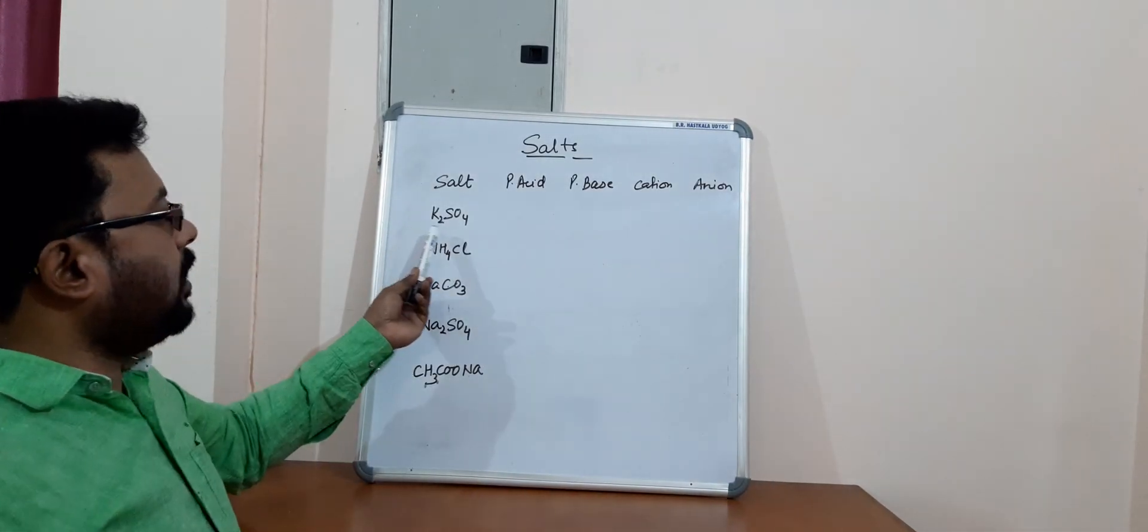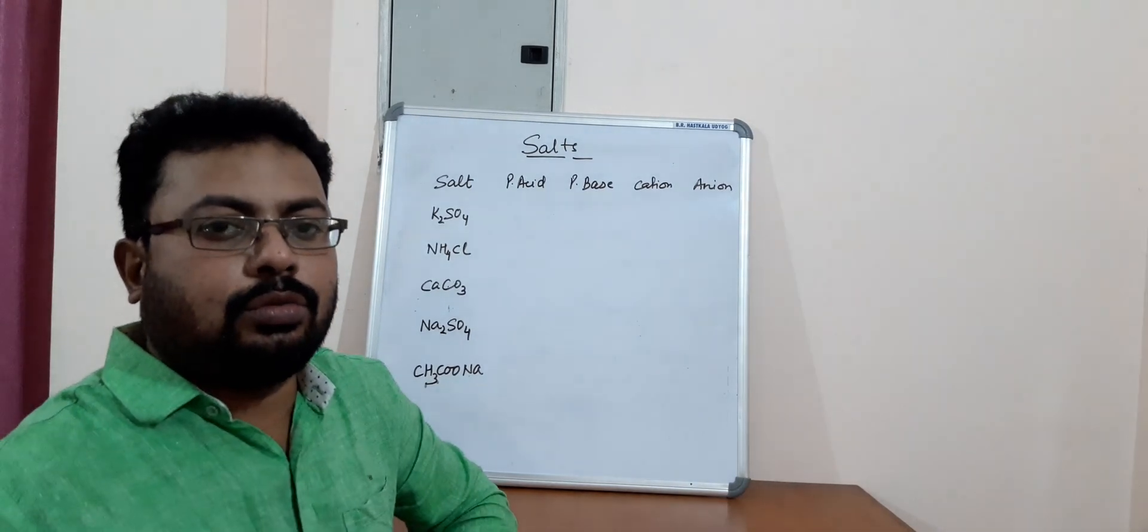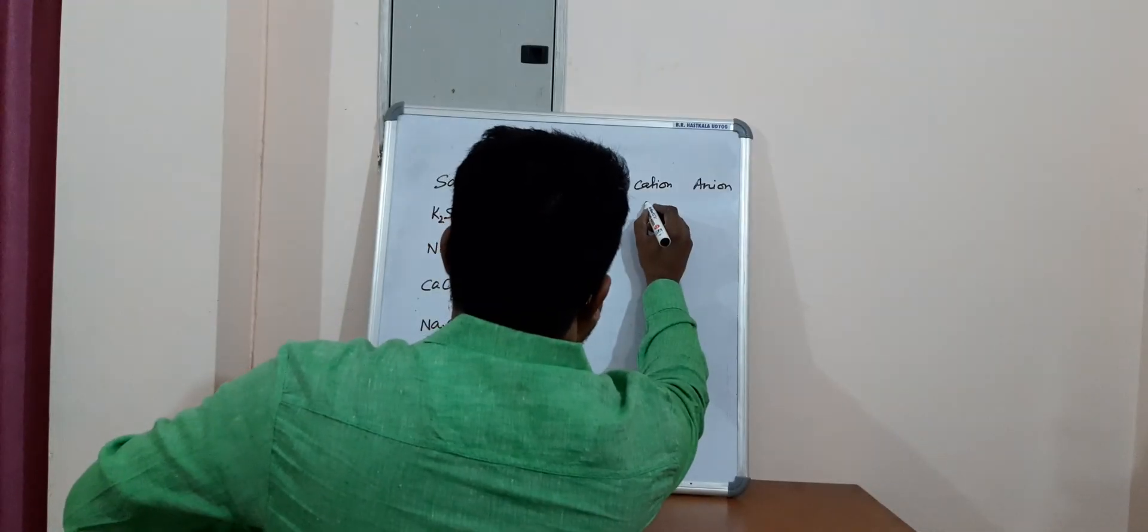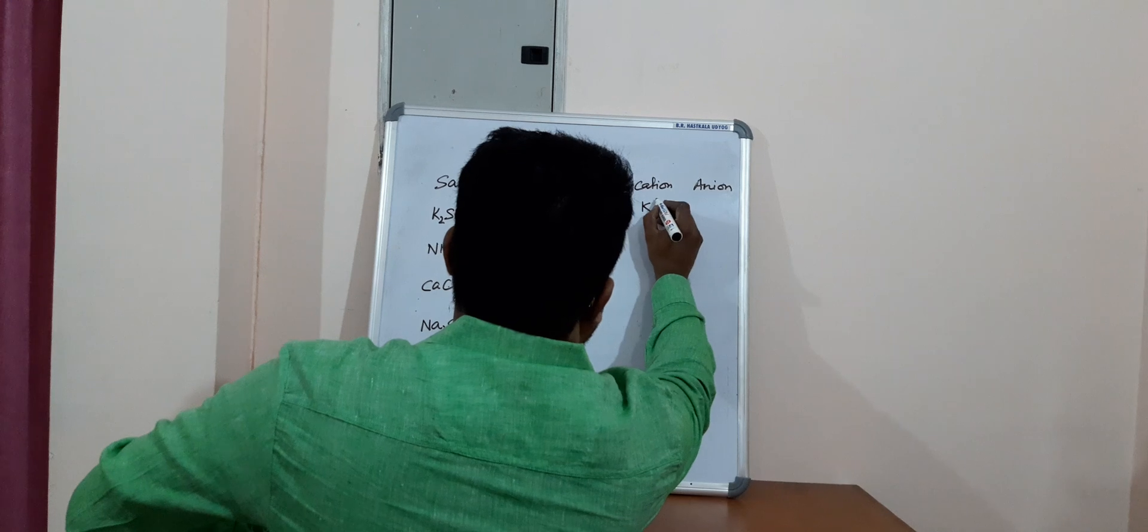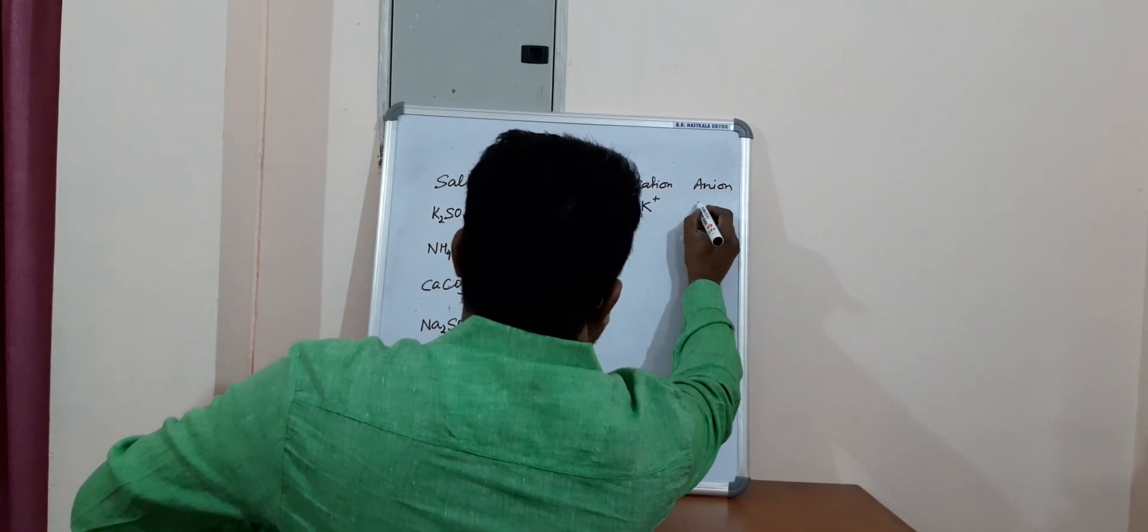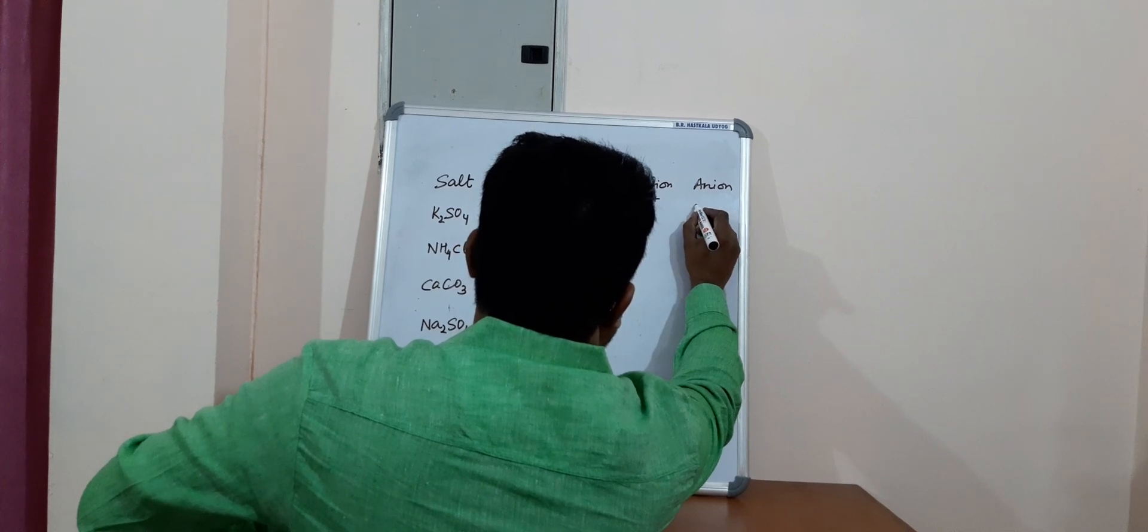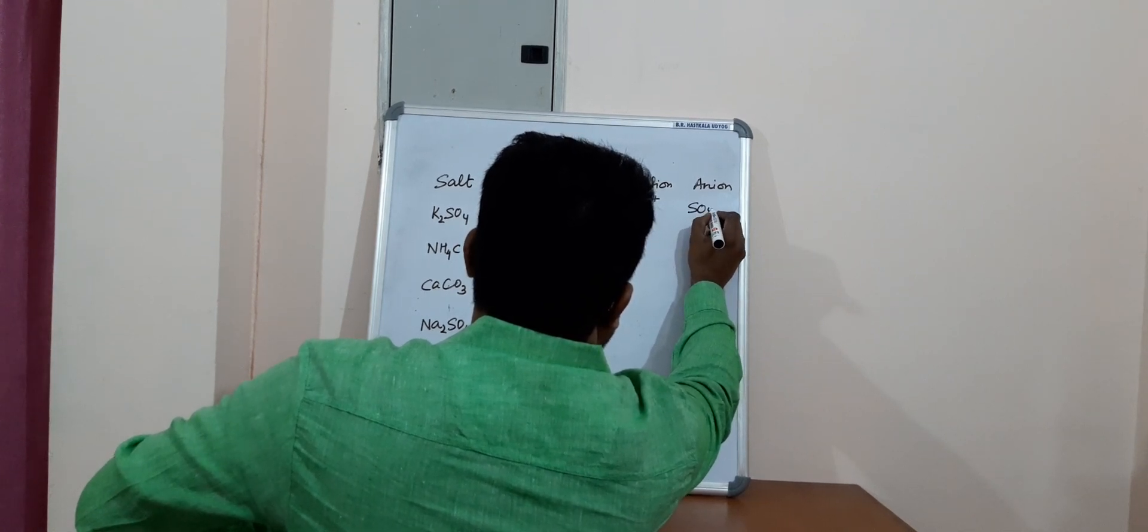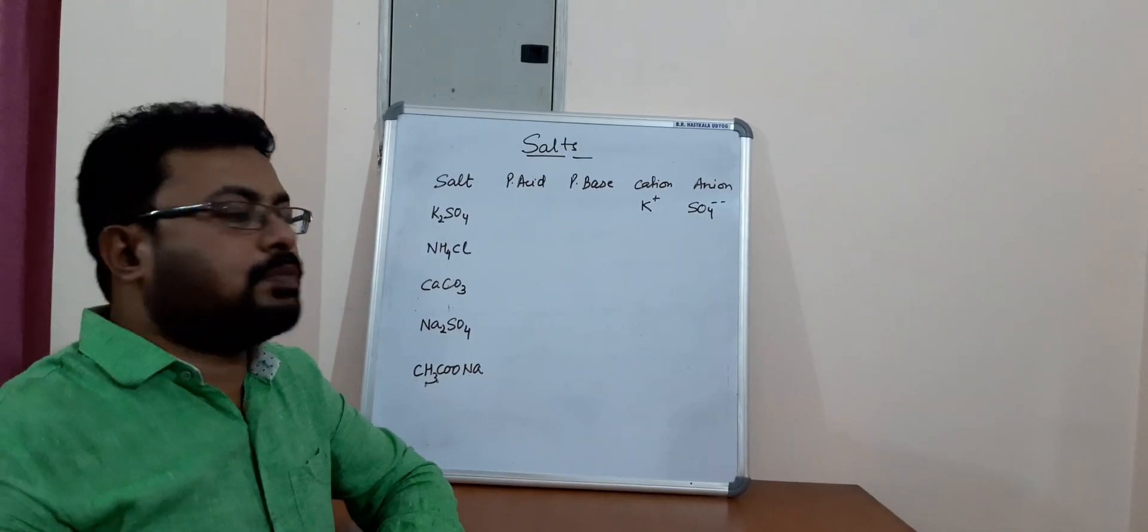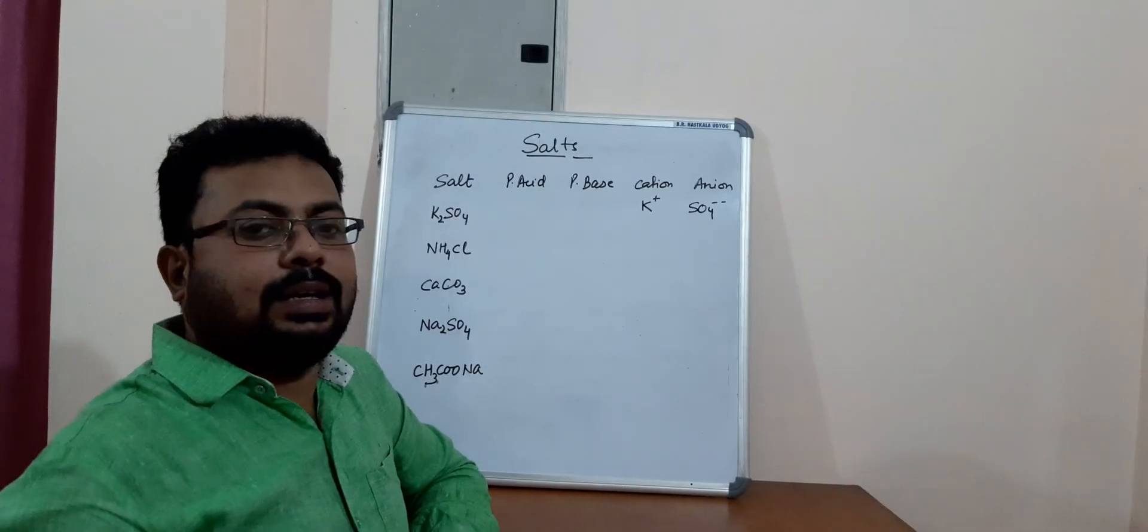So this is K2SO4. Do you know what this salt is known as? If I tell you about the cation, what cation do we have? We have potassium. And what do we have here as an anion? We have sulfate as an anion. So cation is potassium and anion is sulfate.